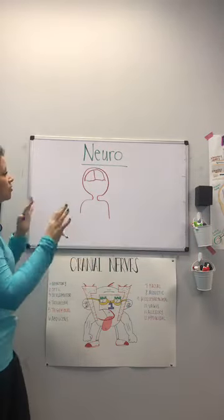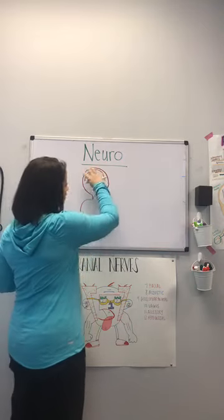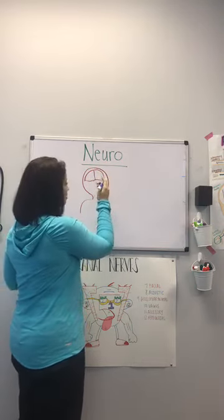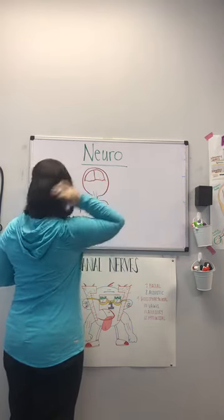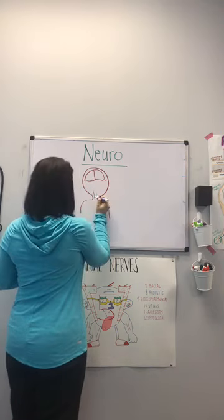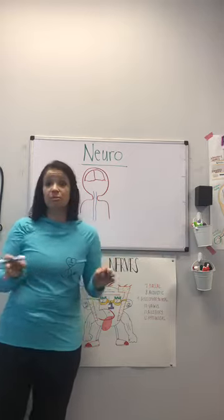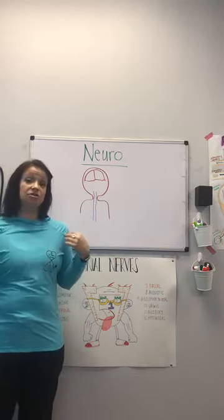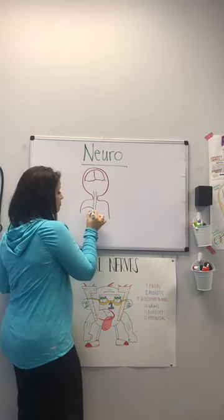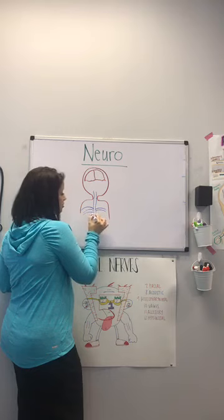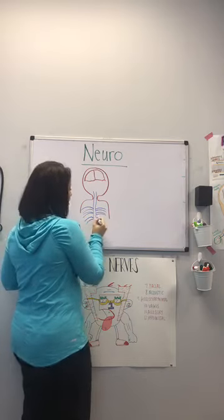We know that the brain is the big boss of the whole entire body. You've got the brain up here, then the brain stem going down, and then the spinal cord coming down this way. The spinal cord's job is to send out electrical impulses to the rest of the body. The brain tells the spinal cord what electrical impulses to send. Then we have dermatomes — lines the body uses along which the spinal cord sends electrical impulses to different parts of the body.